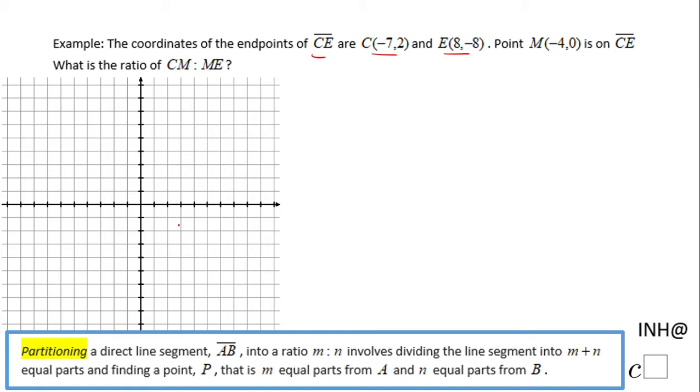So let's see. C is (-7, 2). One, two, three, four, five, six, seven and two. It's right here, point C.